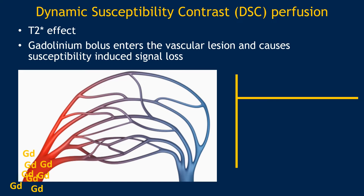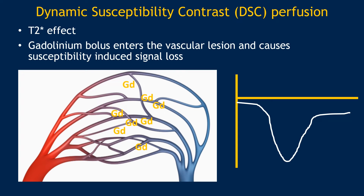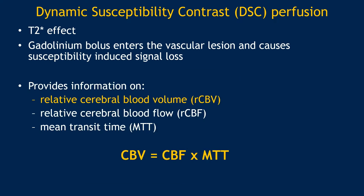Dynamic susceptibility contrast perfusion is a T2 star effect technique, performed with gadolinium injection. As gadolinium goes into the vascular mass or lesion, it causes a dip in signal as the gadolinium contrast ions dephase. As the tumor — if it's very vascular — causes more and more dephasing and signal loss, that is what we estimate to be the relative cerebral blood volume. DSC provides information on relative cerebral blood volume, using the formula: CBV equals CBF times the mean transit time, or MTT.